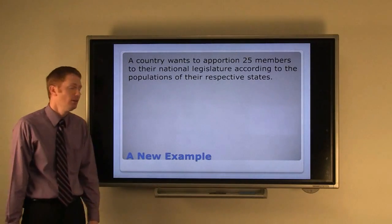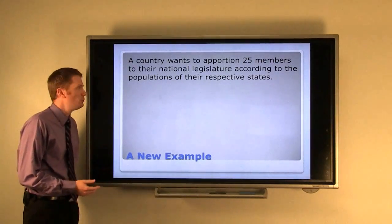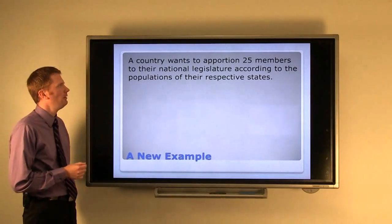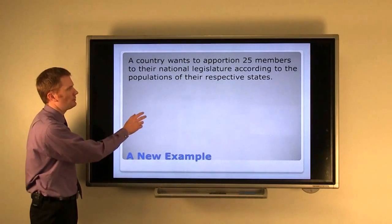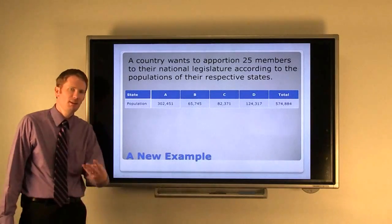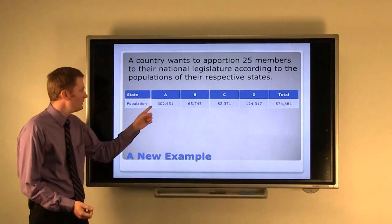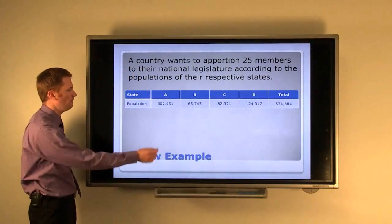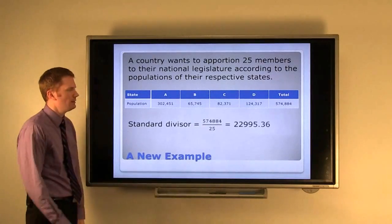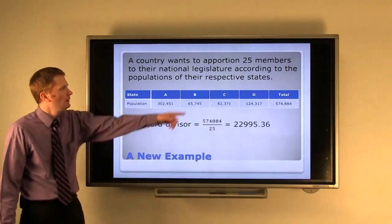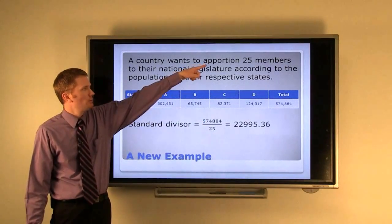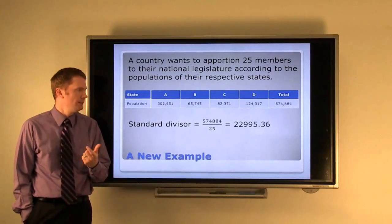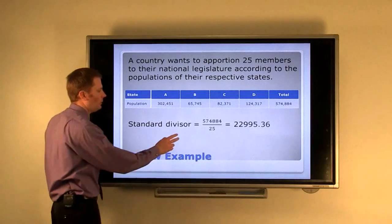Let's do a simple example. We're not going to go back to the 1820 data; it's much more difficult to do this on a larger data set. Suppose a country wants to apportion 25 members to their national legislature according to the populations of their respective states. It's a small country with four states: A, B, C, and D. We calculate the standard divisor by taking the total population and dividing by the number of items we want to apportion, and we get 22,995. That's how many people each state would need to deserve one representative.